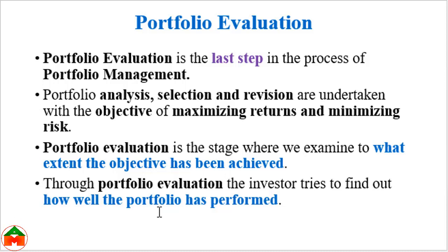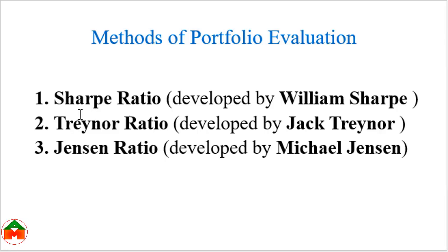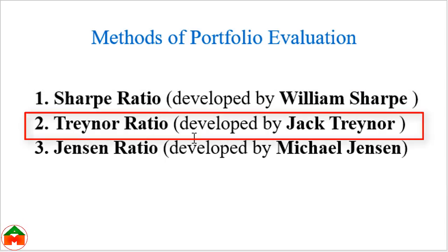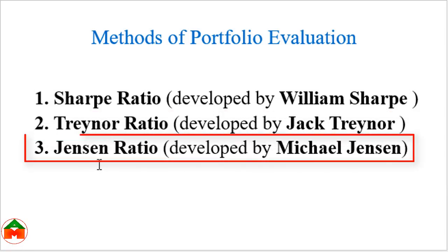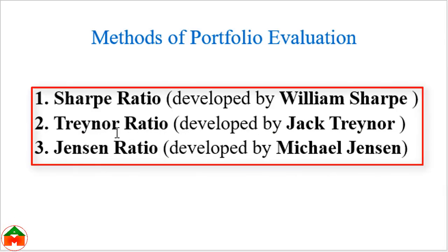To evaluate the performance of a portfolio we can use some methods. There are three methods broadly used. The first one is the Sharpe ratio, developed by William Sharpe. The second one is the Treynor ratio, developed by Jack Treynor. The third one is the Jensen ratio, developed by Michael Jensen. By using these three ratios we can evaluate the performance of a portfolio.